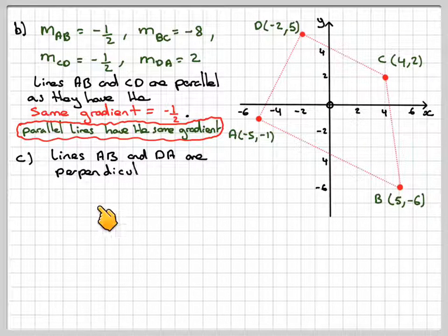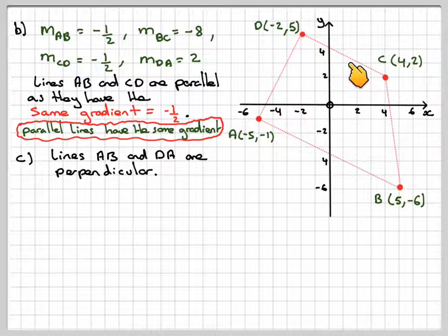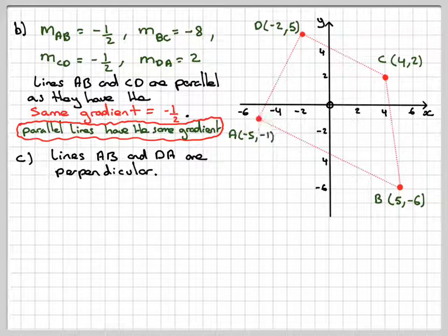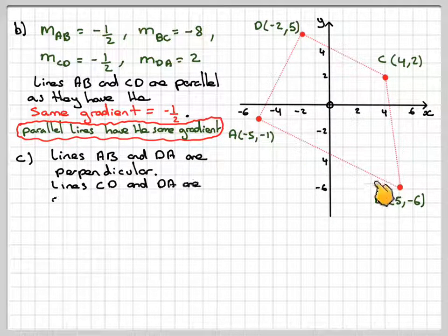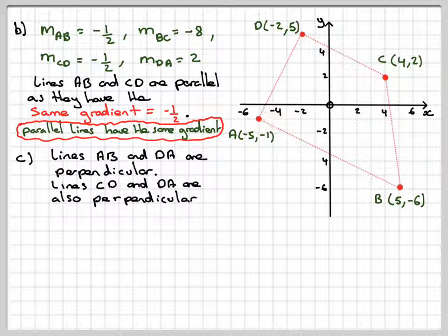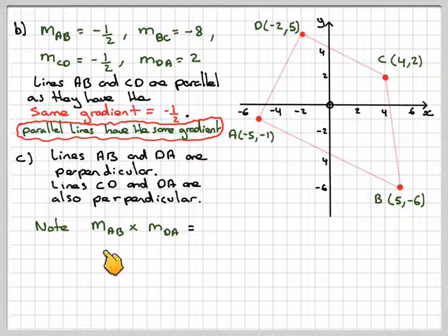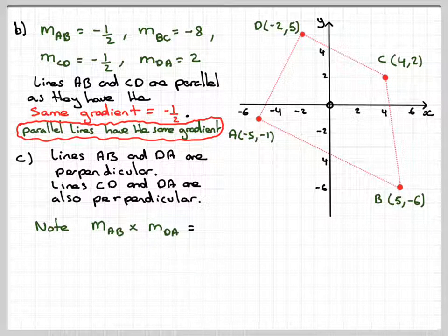Lines AB and DA are perpendicular. So what we're saying is this line here and this line here is perpendicular. Also, this line here is also perpendicular to this one. Now, what is the condition for perpendicular lines? If you did m_AB times m_DA...